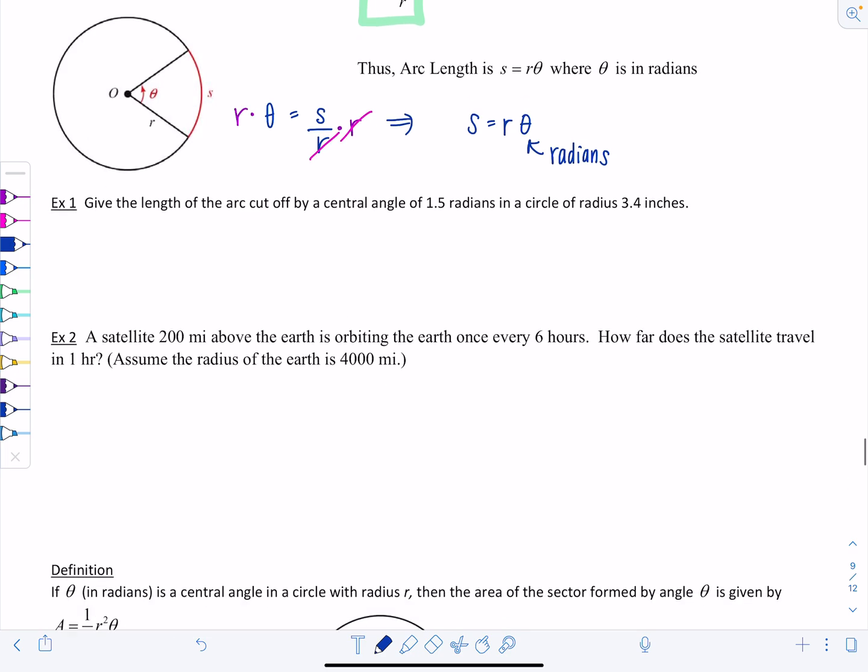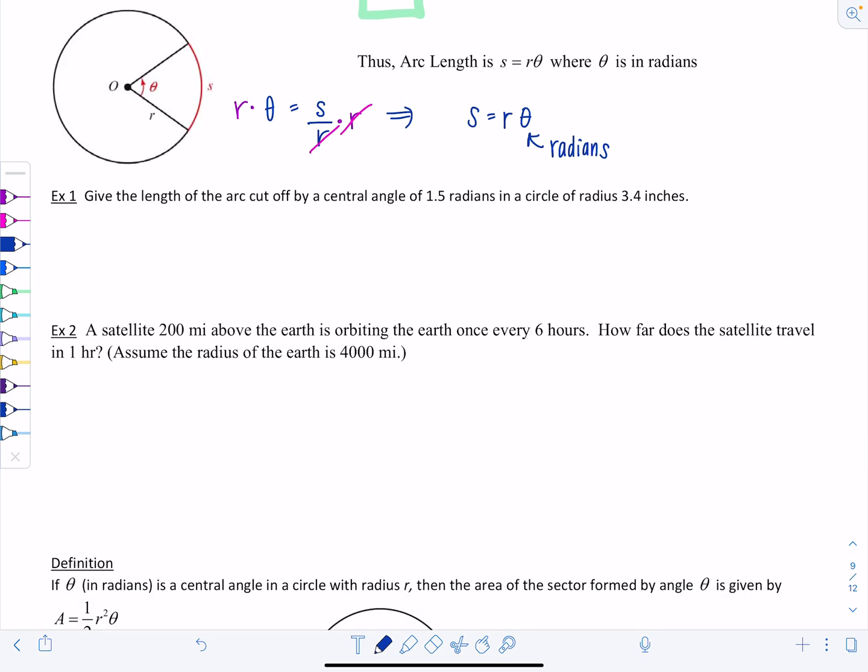Give the length of the arc cut off by a central angle of 1.5 radians in a circle of radius 3.4 inches. The angle is 1.5 radians, not in degrees, so we're good to go. You're going to need to memorize s equals r times theta, which in this case is 3.4 times 1.5.